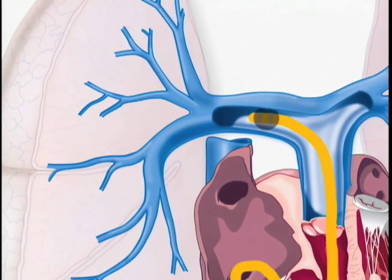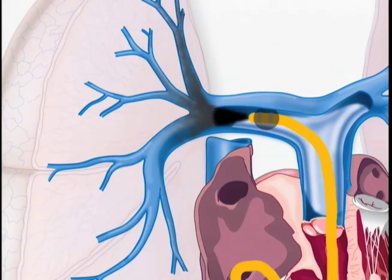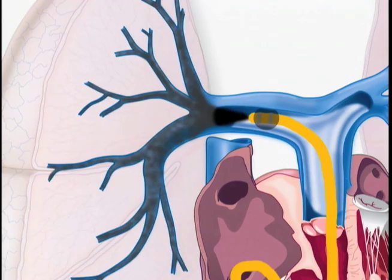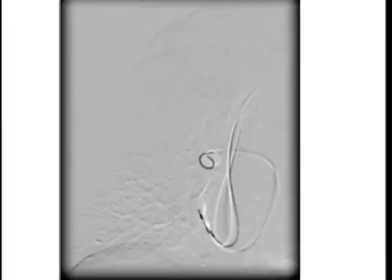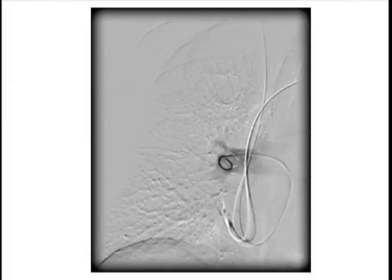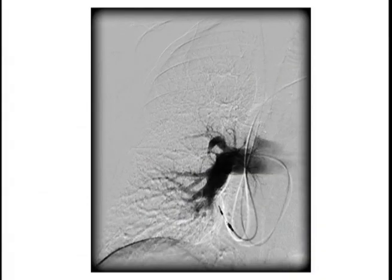X-ray dye is then injected into the pulmonary arteries through the catheter. X-ray pictures are continuously taken to show the flow of dye and blood in your lungs.